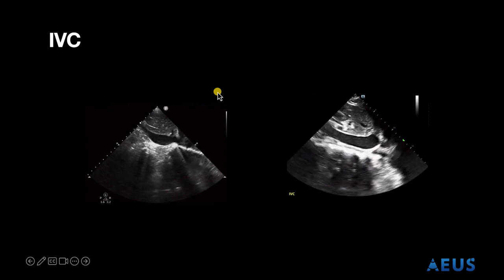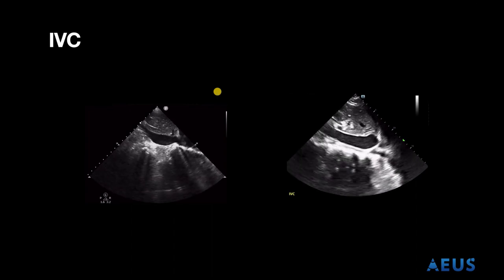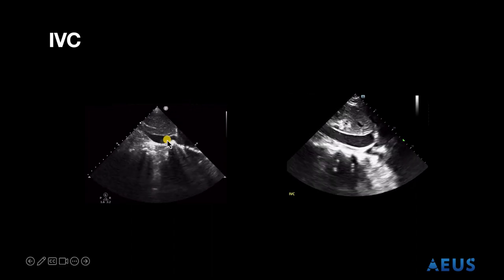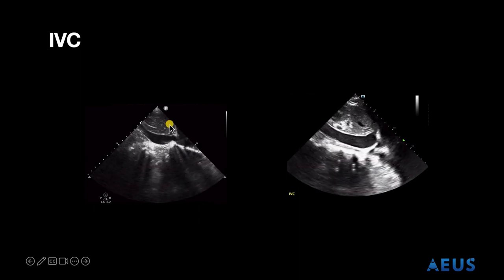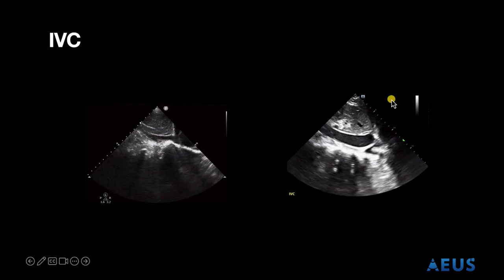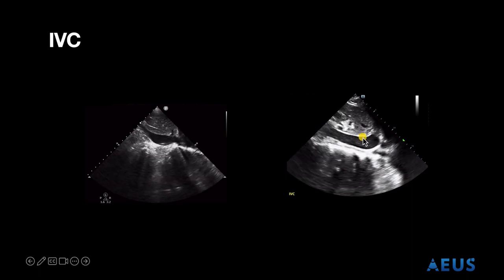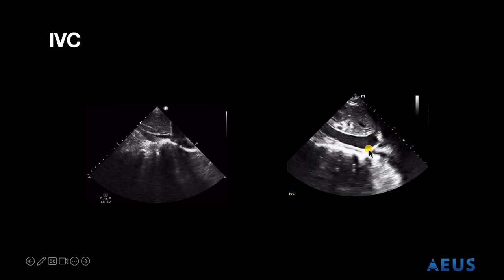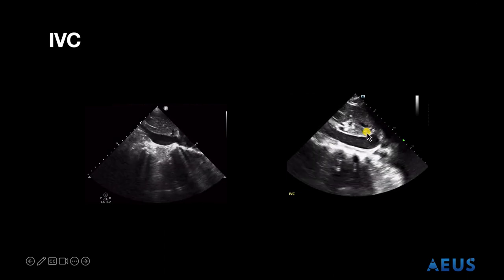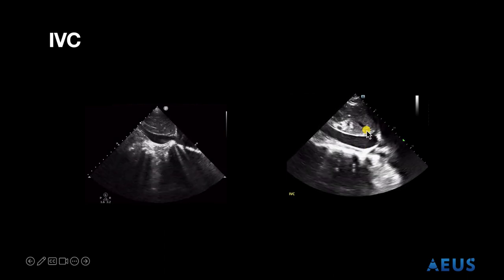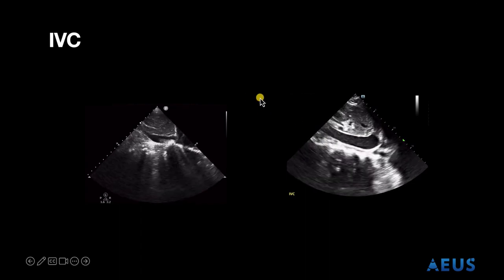Lastly, let's take a look at the IVC. An example on the left is an IVC with greater than 50% variation during respirations — you can see the walls of the IVC come together. The other example shows an IVC with minimal change with respiratory variation — the walls of the IVC do not appear to be coming together during respirations.